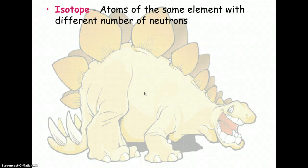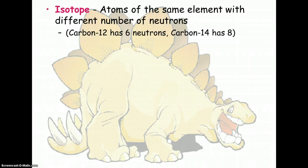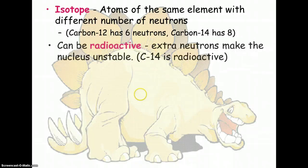And this is true for most elements. Most elements have two or three different versions, or isotopes in nature, that have different numbers of neutrons. In the case of carbon, we said carbon 12 had six, and carbon 14 had eight.